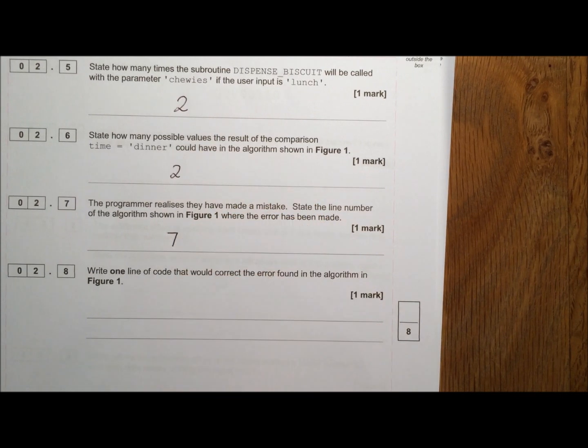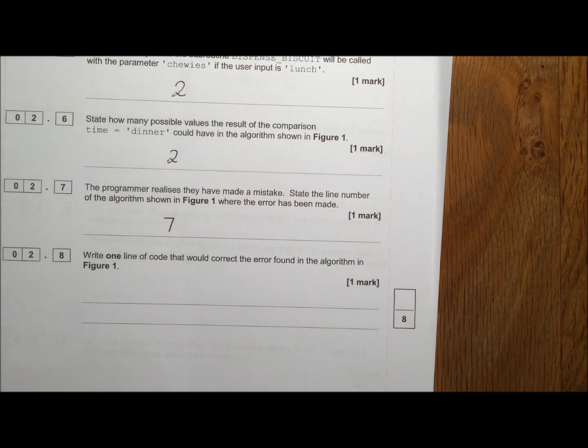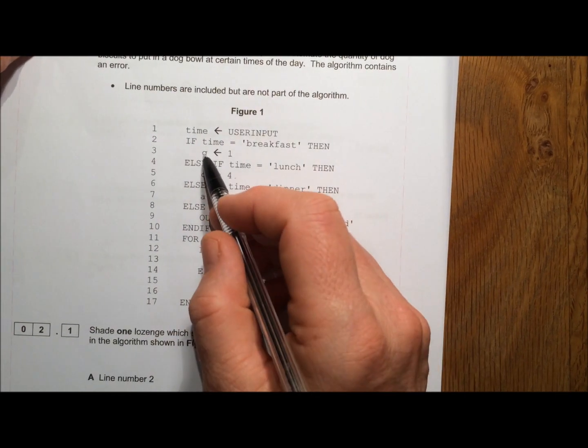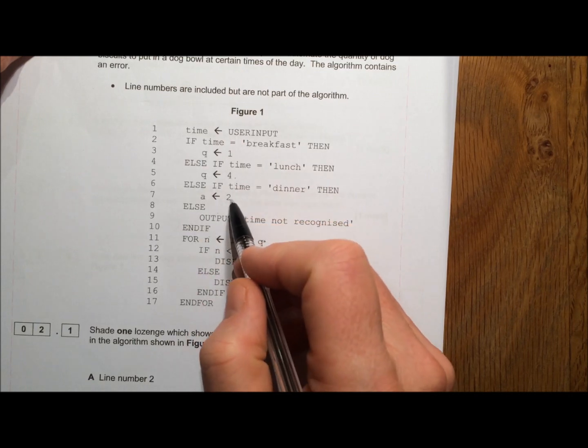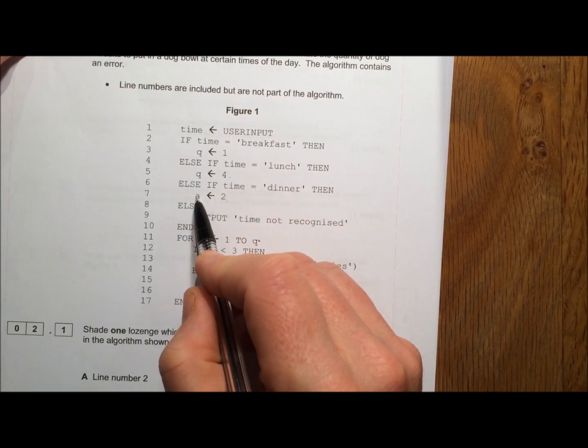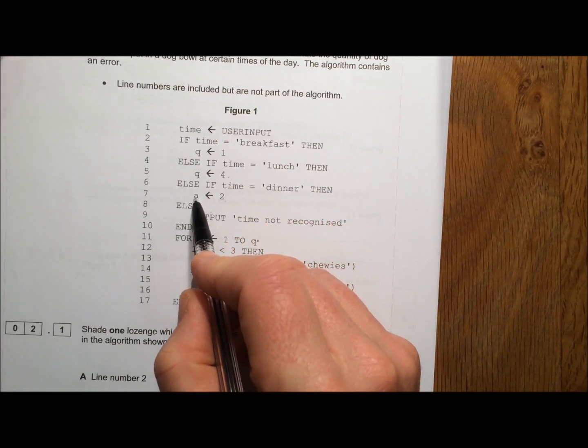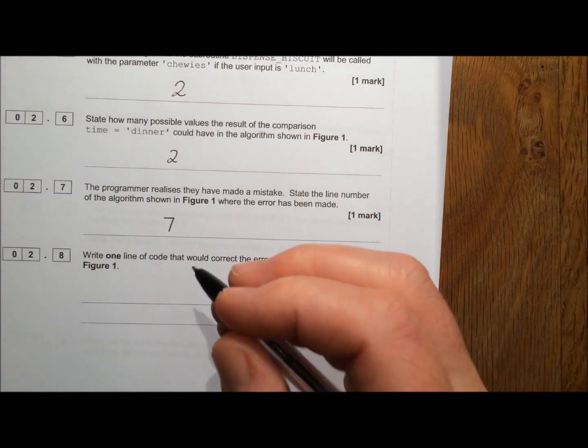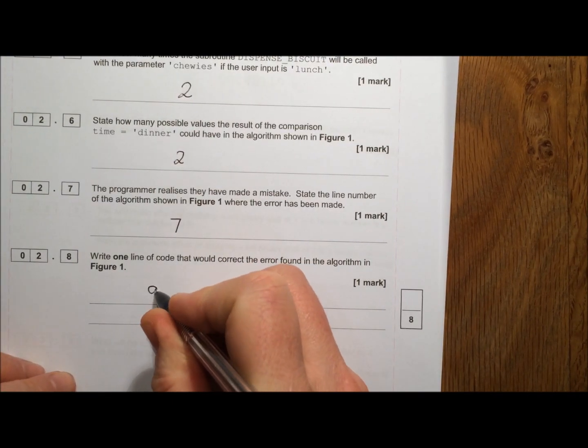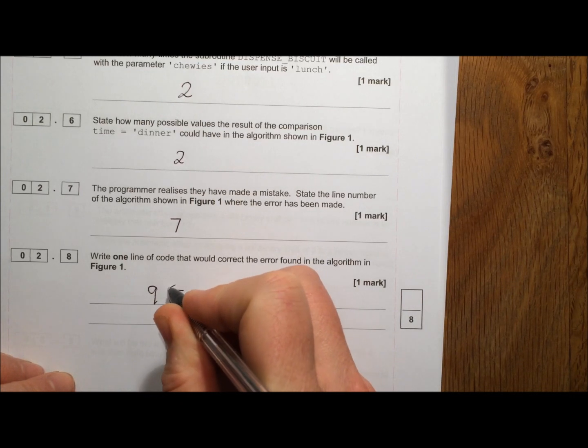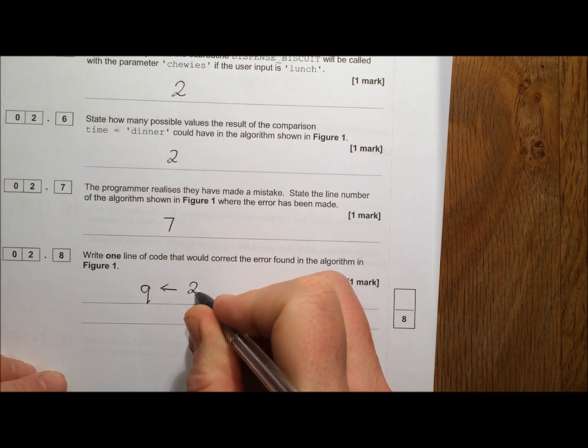And then we're asked to say how do we correct that error. Well it seems to me if we look at it, if we've been assigning values to Q here and here, it seems logical that we should be assigning the value 2 to Q here, not to A. So the correct line of code would be Q is assigned the value 2.